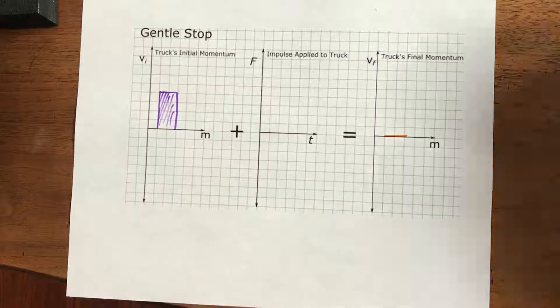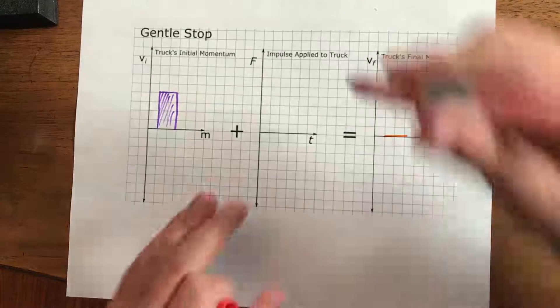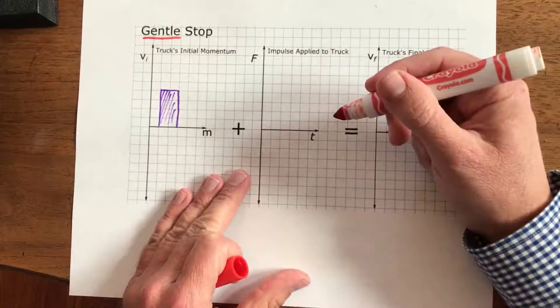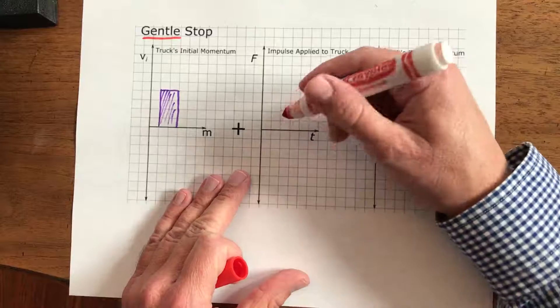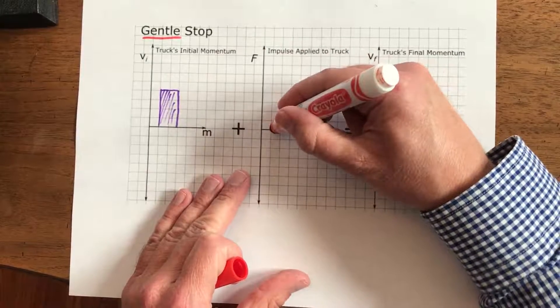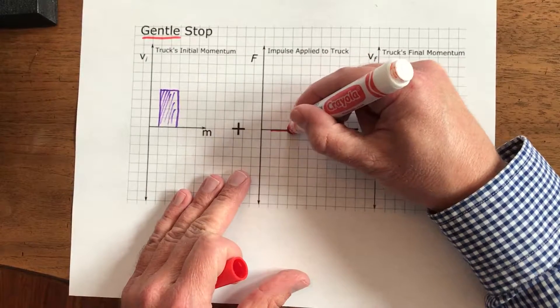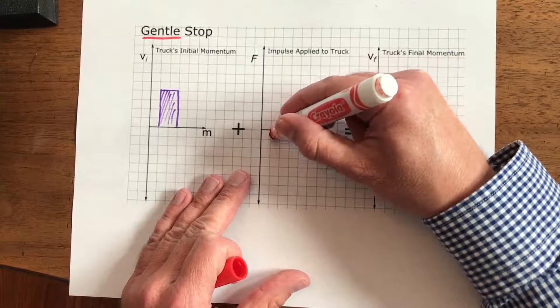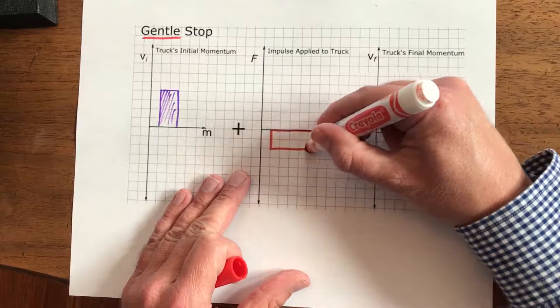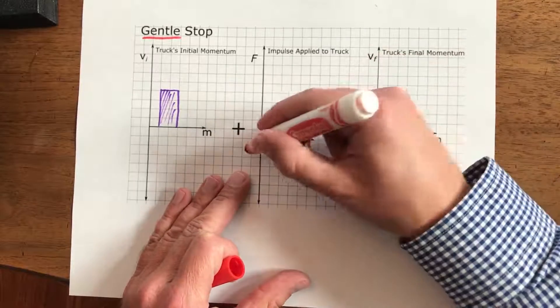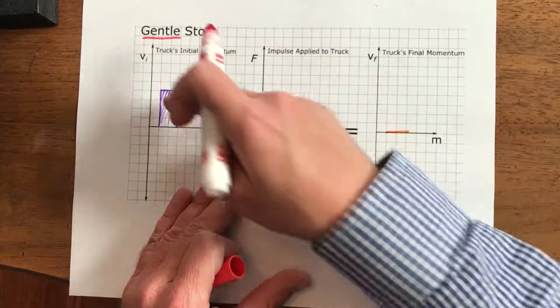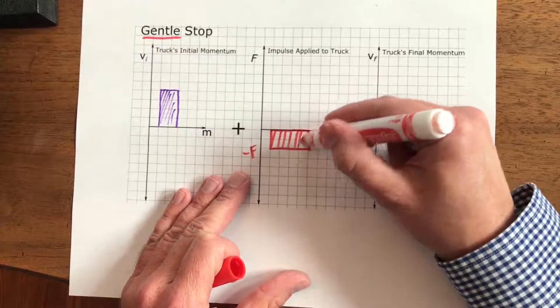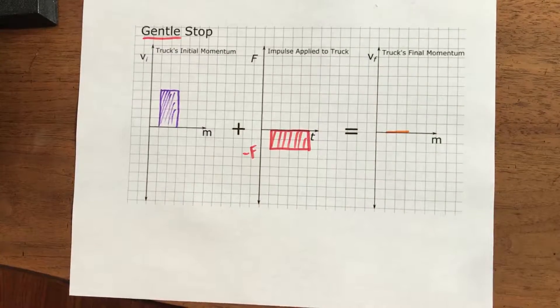So what if we're gonna do a gentle stop like this? Well that means not that much force over a longer period of time. I still got to get eight squares, so I'm gonna go one, two, three, four wide, a longer amount of time, and then I'm gonna go two squares down. Why down? Well we need a negative force because we got to take away that momentum there.